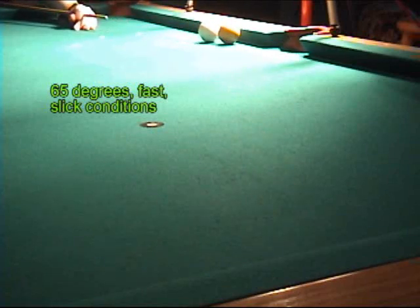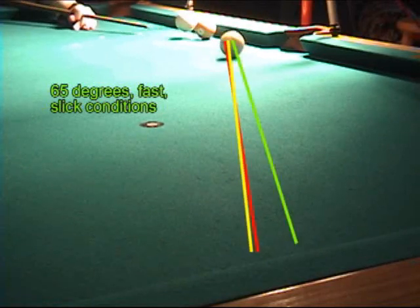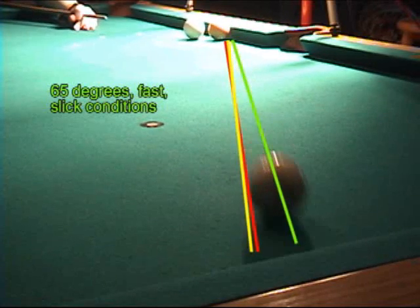The next two shots are with the polished ball, showing the effects of slick conditions. This first shot is at fast speed, indicated by green. Here you can see that the ball rebounds significantly longer with slick conditions.